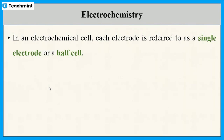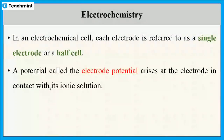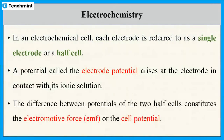In an electrochemical cell, each electrode is known as a single electrode or a half cell. When the metal is immersed in its own ionic solution, a potential arises and that potential is known as the electrode potential.